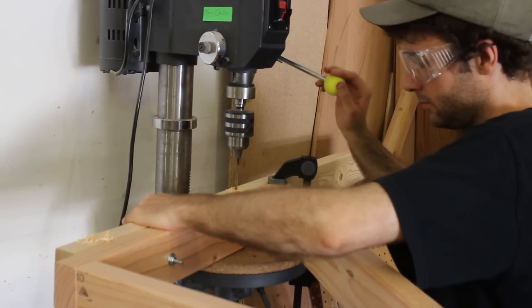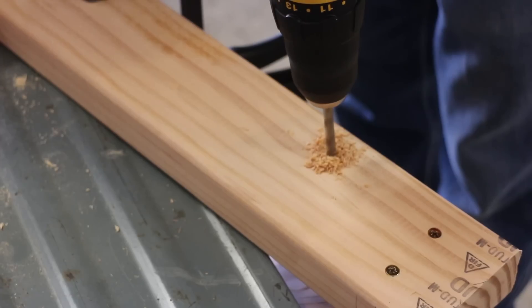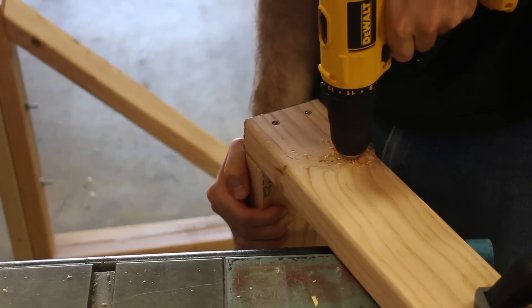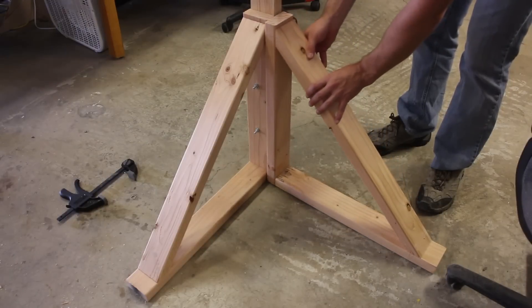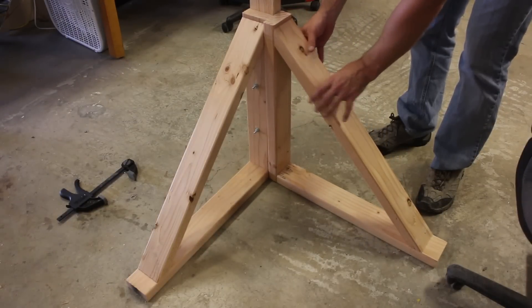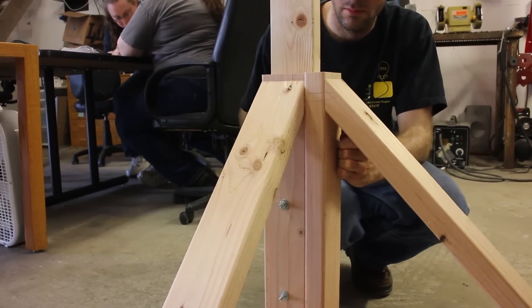To drill through the 2x4 the long way, we used the drill press. Then we drilled matching holes in the legs. Then all we had to do was bolt it on. We bolted them down tight and we were good to go.